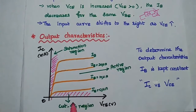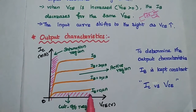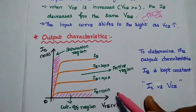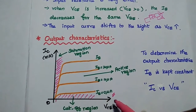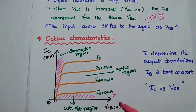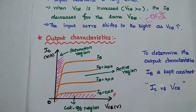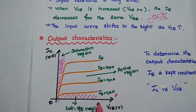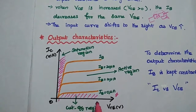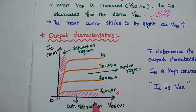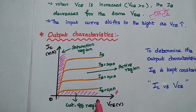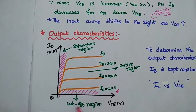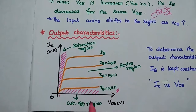In the cut-off region, both junctions are reverse biased. When IB equals 0, there is no input current. If input is open, there is a small current conduction due to only the reverse leakage current. This leakage current ICEO is negligibly small, so the transistor is in an off condition — it does not conduct any significant current in this cut-off region.